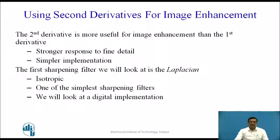The first sharpening filter we will look at is the Laplacian filter, which is isotropic — meaning it finds the difference in all directions. It is one of the simplest sharpening filters to work with, and its implementation is very simple.